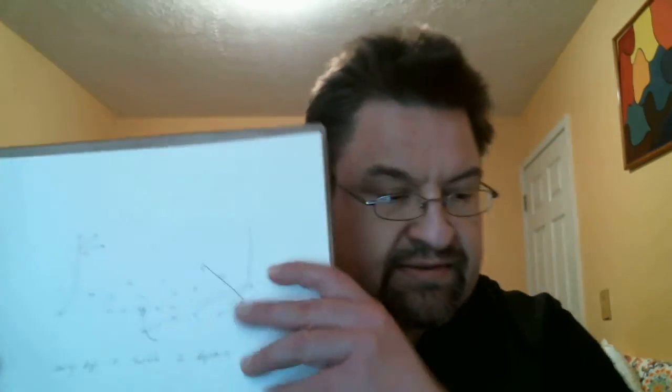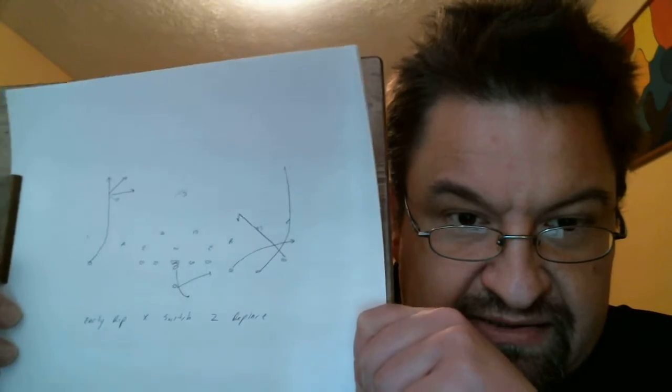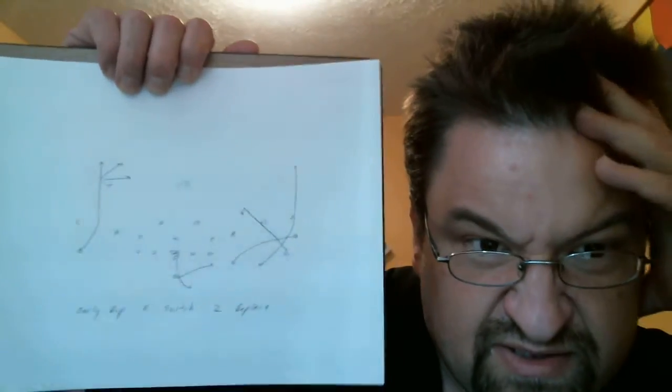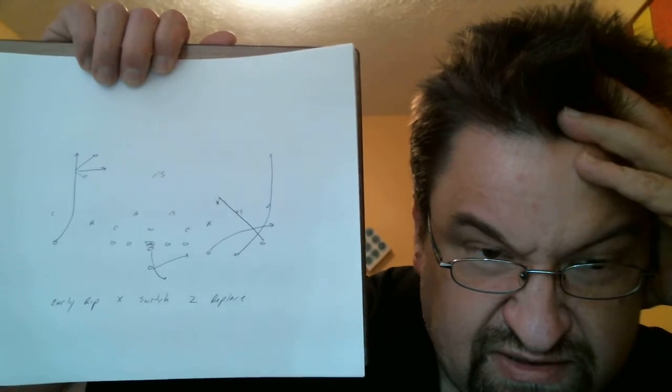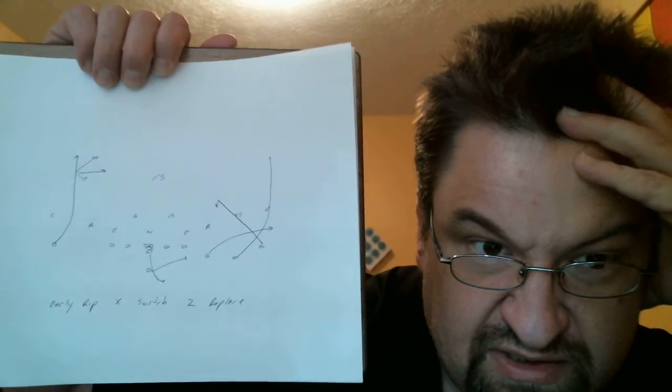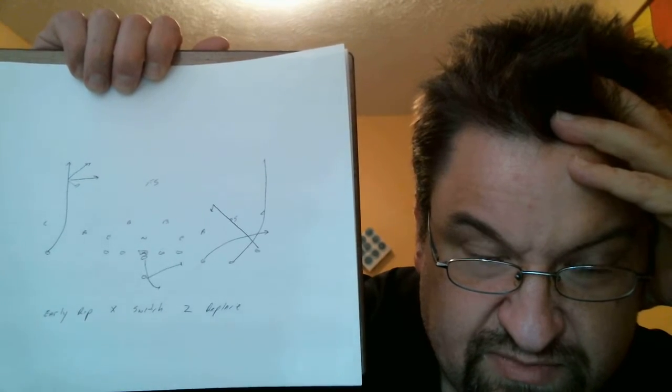Okay guys, I got a concept for you: early rip X switch Z replace. Now as you see, the X on the backside is a single receiver. He's gonna run the switch concept at 12 to 18 yards, making his choice based on the secondary coverage. He's gonna break it down - 12 to 18, bust it across the formation, hit a post behind the free safety, or continue up the seam.